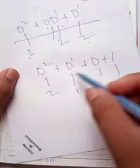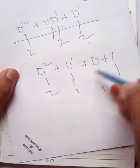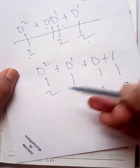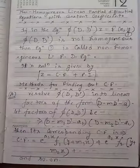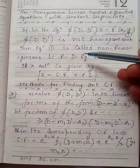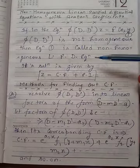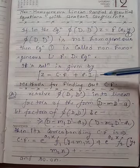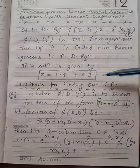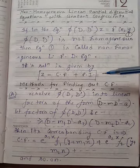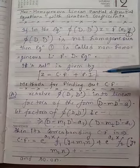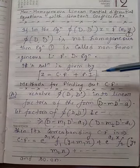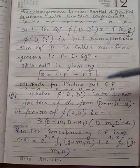If even one term is non-homogeneous (i.e., has a different degree from the rest), the equation is non-homogeneous. The method to solve non-homogeneous differential equations is different from homogeneous ones. The procedure for writing the complete solution remains z = CF + PI.